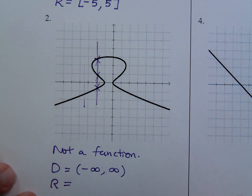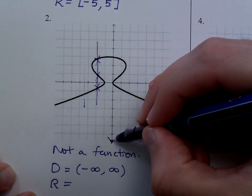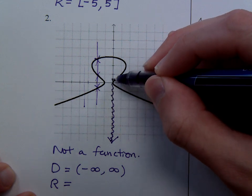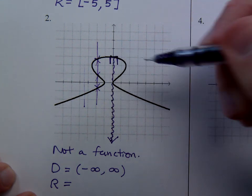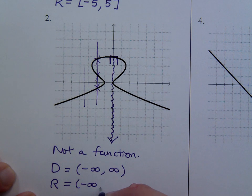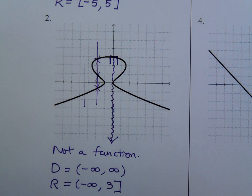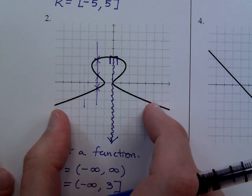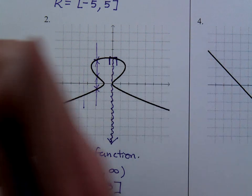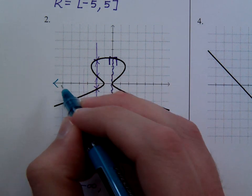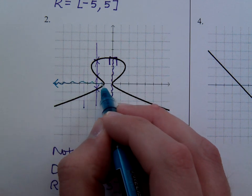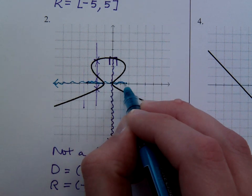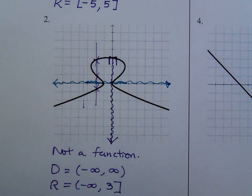And what about the range? Well, it looks like this graph is going to keep getting lower and lower, so it's coming all the way from negative infinity. And it goes all the way up to right here — that's the highest it gets. So that's from negative infinity to positive three. If you compress everything onto the y-axis, it's from negative infinity to three. And on the x-axis, it goes all the way across — that's why the domain is all real numbers.